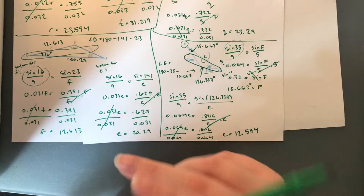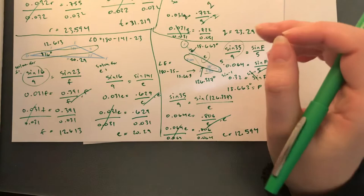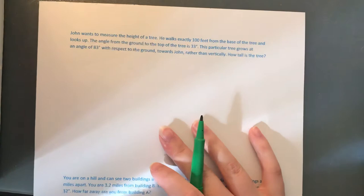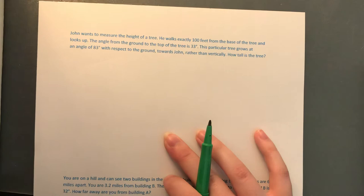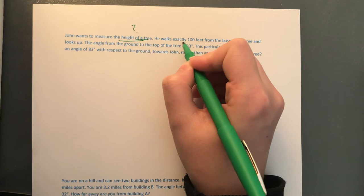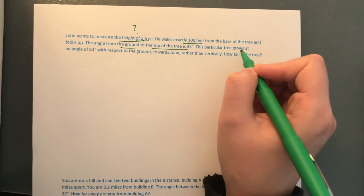Alright, so those are the level two questions for solving the triangles. Now let's look at some level three questions — these are the same thing except you have to come up with the triangle yourself; it's an application problem. John wants to measure the height of a tree. He walks exactly 100 feet from the base of the tree. The angle from the ground to the top of the tree is 33 degrees. The tree grows at an angle of 83 degrees with respect to the ground towards John rather than vertically. How tall is the tree?